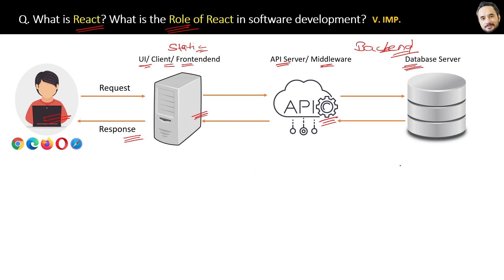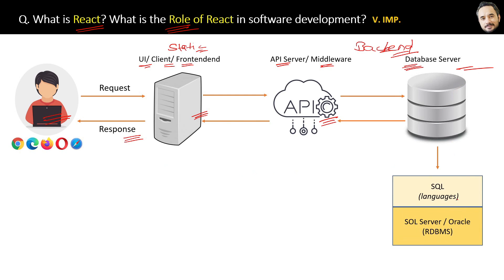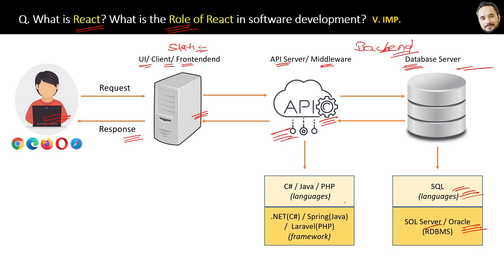This is the basic flow. Now for the database, we use SQL as a language for running scripts, and SQL Server or Oracle as the DBMS. There are other DBMS as well, but these are the popular ones. Similarly, for the backend or API, we use C#, Java, or PHP languages, and the frameworks are .NET, Spring, or Laravel.